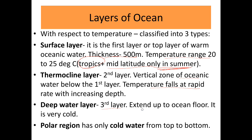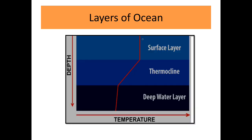The deep water layer is the third layer, which extends up to the ocean bottom and is very cold. In the polar region, cold water exists from top to bottom, so we cannot classify it into different layers. In the polar region the falling temperature is somewhat constant with depth, whereas in the thermocline layer the falling temperature is very rapid.